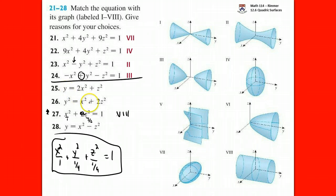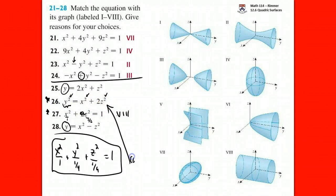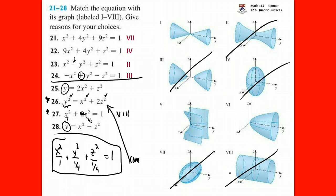The real issue is distinguishing 25 from 28. Question 26 stands out next — it has all variables squared, and with the plus between terms and set equal to zero, it's a cone. We've now used Roman numerals II, III, IV, VII, and VIII. We're deciding between a cone, a bowl, and a saddle. Question 26 is the cone.